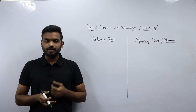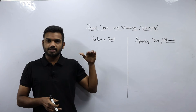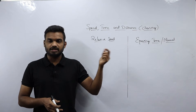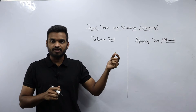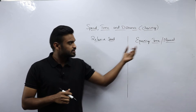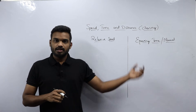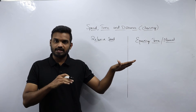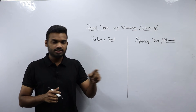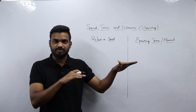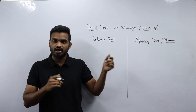In the relative speed method, when both persons travel in the same direction, the relative speed is the difference of their speeds. In the equating time method, we equate the timings only when it is given that one person is catching another person. If the question does not say the person is catching another person — even if they are traveling in the same direction — we do not equate the timings. We only equate timings when one person is catching or overtaking the other.